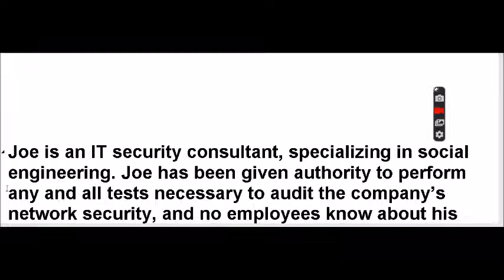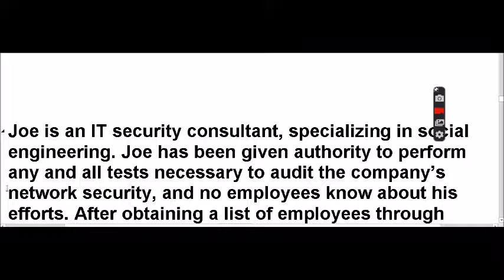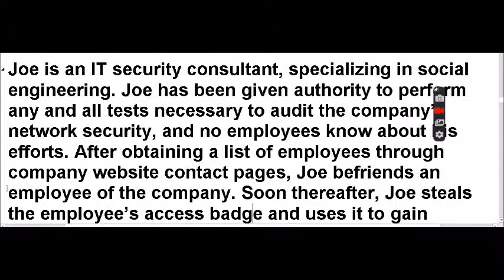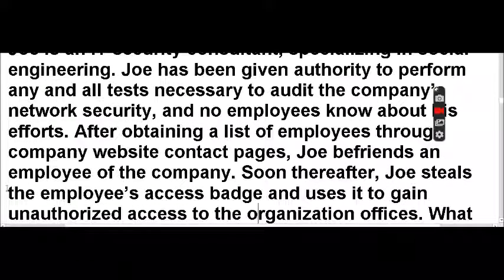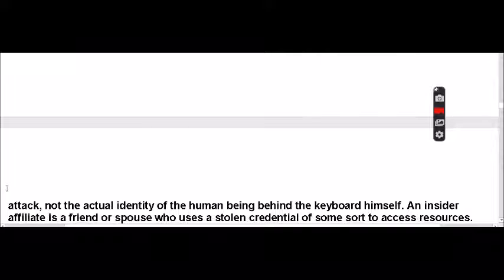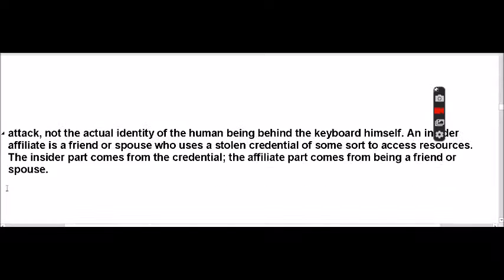Joe is an IT security consultant specializing in social engineering. Joe has been given authority to perform any and all tests necessary to audit the company's network security, and the employees know about his efforts. After obtaining a list of employees through the company website and contact pages, Joe befriends an employee of the company. Shortly thereafter, Joe steals the employee's access badge to use it to gain unauthorized access to the organization's office. Which type of insider threat would he be considered? He would be considered an insider affiliate.